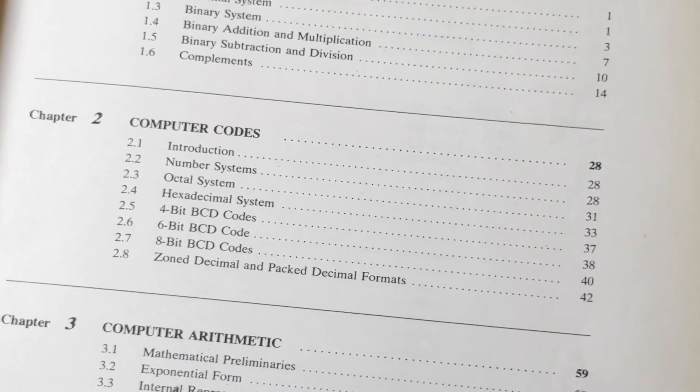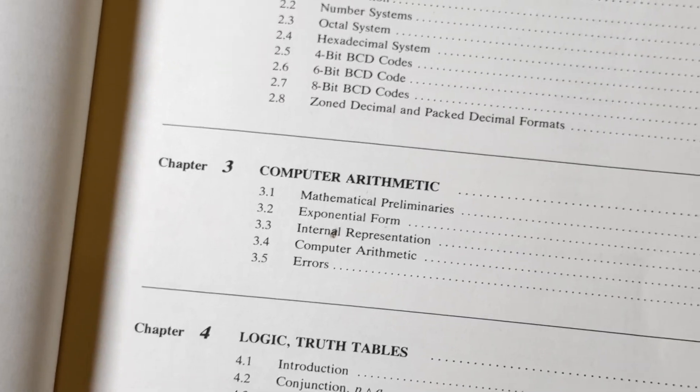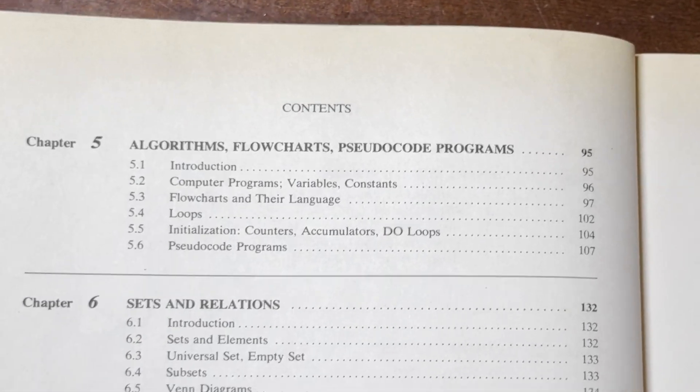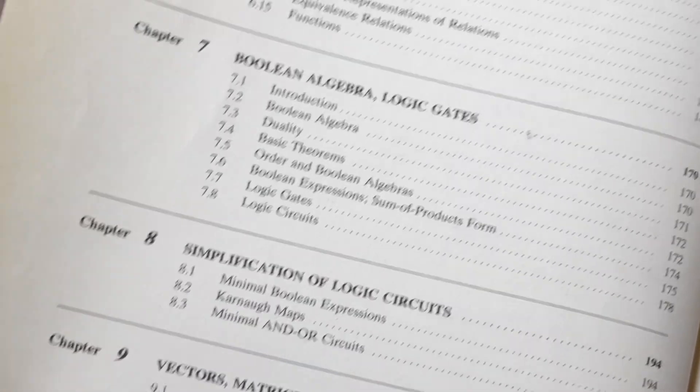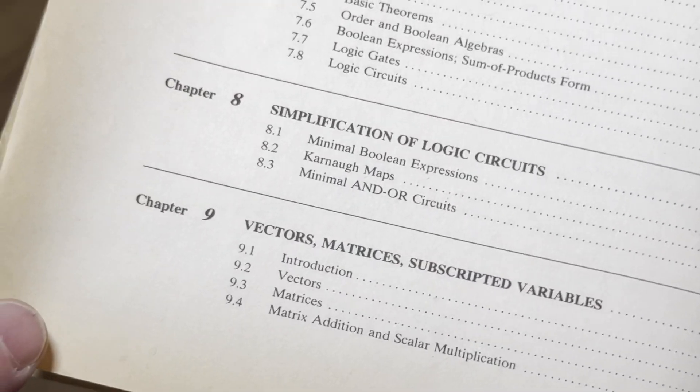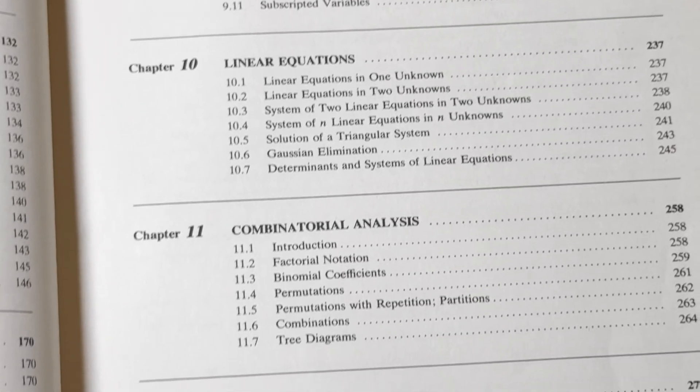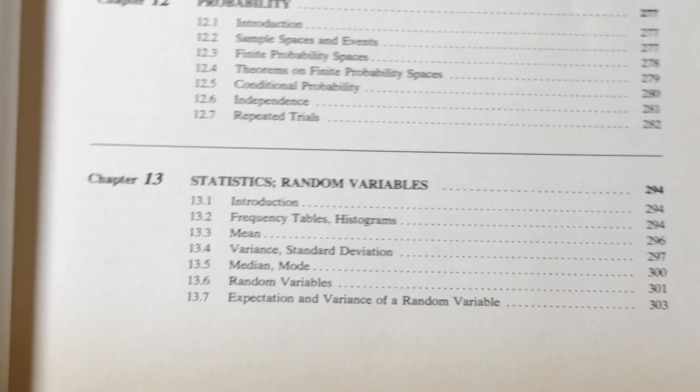Let's look at the contents here. It starts with the binary number system. We have computer codes, computer arithmetic, logic and truth tables. Algorithms, flowcharts, pseudocode programs, sets and relations, Boolean algebra, logic gates, simplification of logic circuits, vectors, matrices, subscripted variables, linear equations, combinatorial analysis, probability, statistics and random variables.